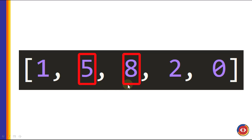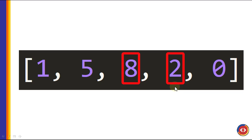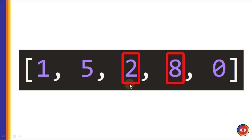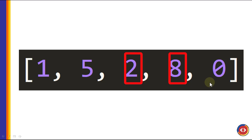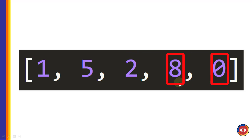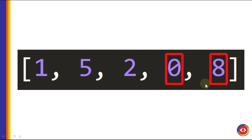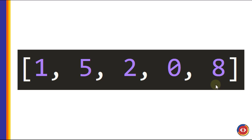So we are going to swap them. Now 5 is the second number and 8 is the third. Then 8 and 2 — they are not in order because 2 is less than 8, so we swap them. Now 8 is the fourth element, sort of floating to the right until it reaches its correct position. Finally, the fourth pair is 8 and 0 — not in order, so we swap them. Now 8 is in the correct position.